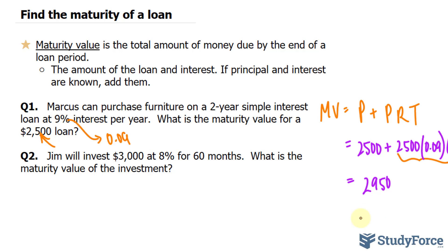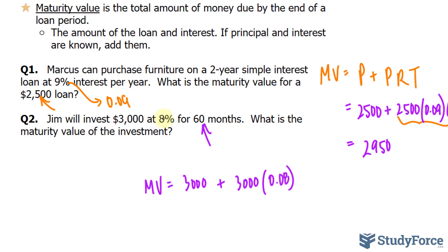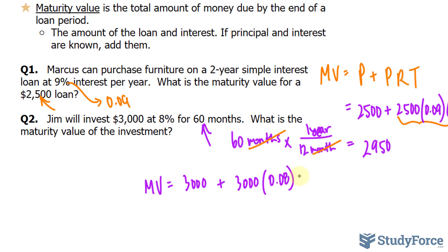Moving on to question two: Jim will invest $3,000 at 8% for 60 months. Notice the difference here — this time they give us the time, but it's in months. What is the maturity value of the investment? We'll use the same formula. MV is equal to 3,000 plus 3,000 times the rate, 0.08. That's a percentage per year, whereas the time here is in months, so we need to change months into years. We'll take 60 months — there are 12 months in a year — so 60 divided by 12 is 5.